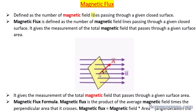These imaginary field lines are drawn, and we check how many are passing through a closed surface — that is how magnetic flux is defined. Magnetic flux is defined as the number of magnetic field lines passing through a given closed surface. It is the measurement of the total magnetic field that passes through a given surface area.